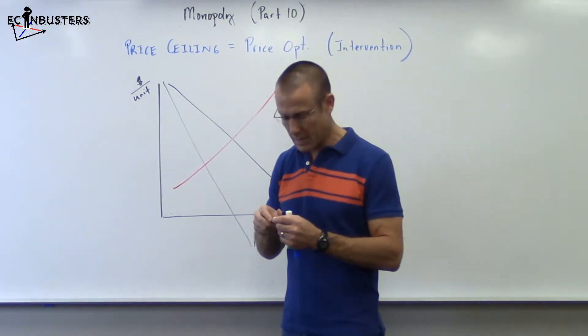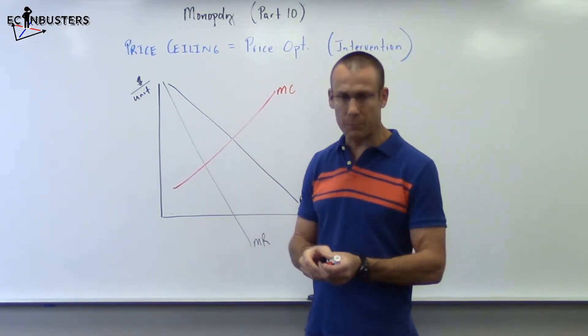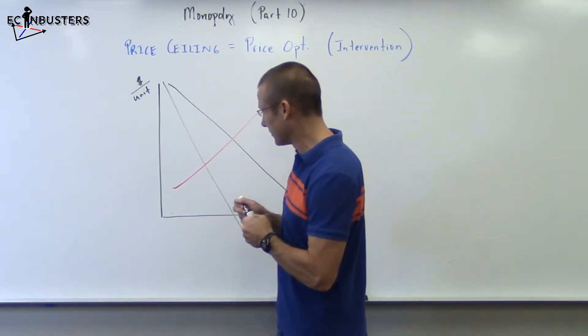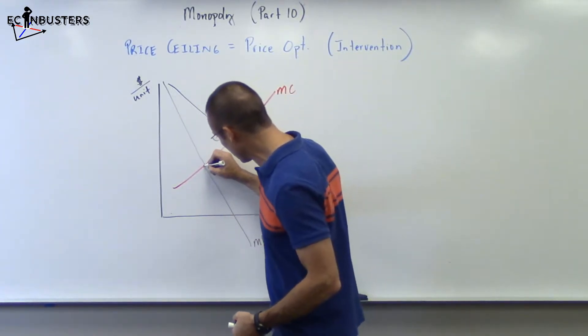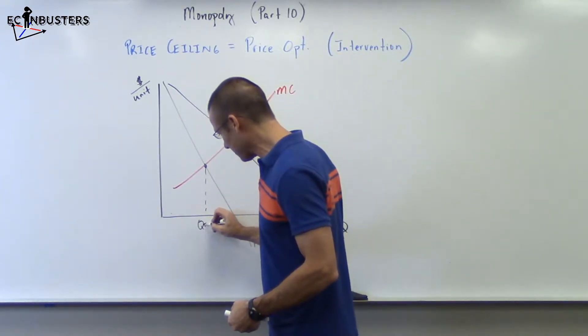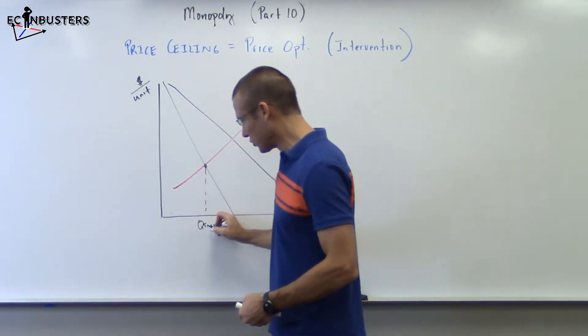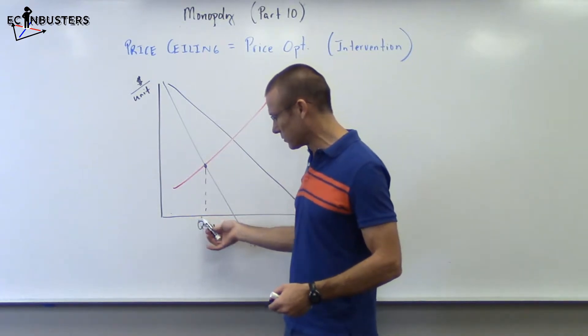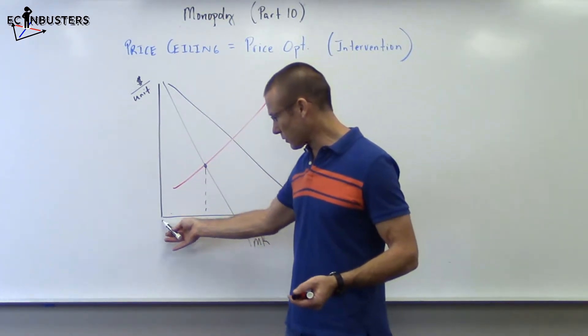Now we're going to go find out the output level, no biggie right? MC equals MR. Find where MC and MR go down, Q profit max. Sometimes we might put just Q monopolist, the quantity the monopolist is going to produce or the quantity that gives us profit max.